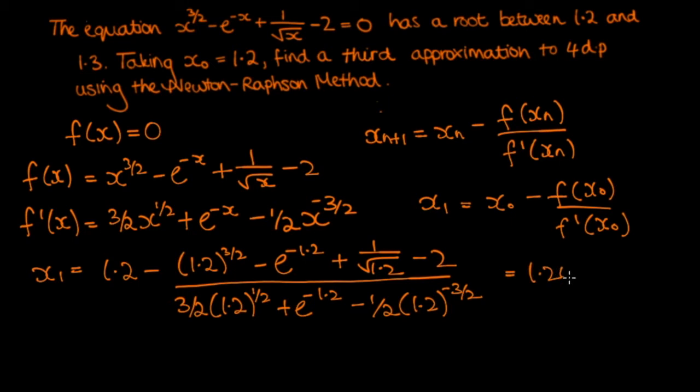Now at this point, we probably shouldn't round because we're trying to find the third approximation. And so instead of rounding, let's plug this into our equation. So we're replacing 1.2 with 1.24718. And to save us a bit of time, that comes out as 1.2466 to four decimal places.